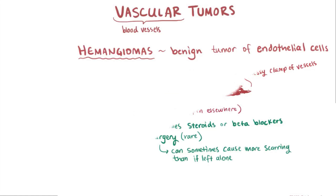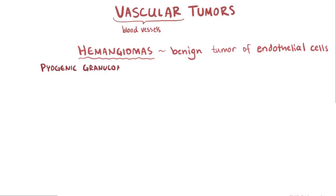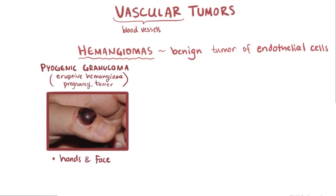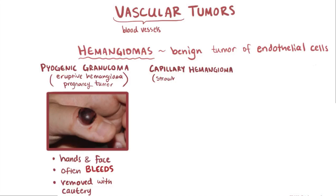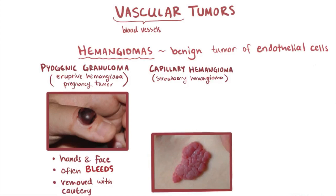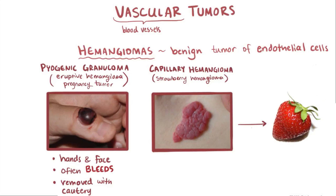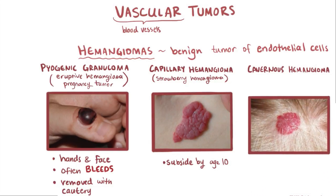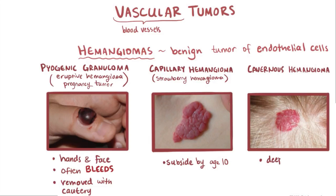There are a couple different types of hemangiomas. Pyogenic granulomas, sometimes called eruptive hemangiomas or pregnancy tumors, look like an overgrowth of tissue and appear most often on the face and hands but can also happen other places. This type often bleeds and can be removed by cautery. Capillary hemangiomas, sometimes called strawberry hemangiomas, are the most common type and are raised and lumpy, kind of like a strawberry. These usually subside by age 10. Cavernous hemangiomas are similar to capillary hemangiomas except that they're typically deeper, and they can disappear on their own but sometimes might need surgical removal.